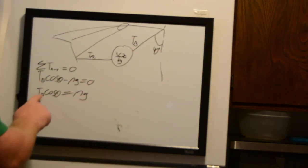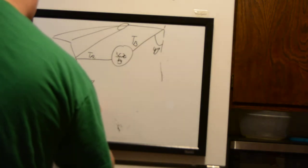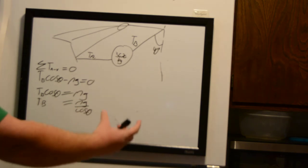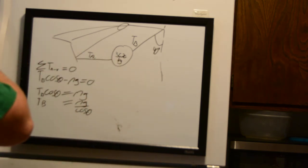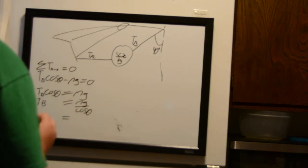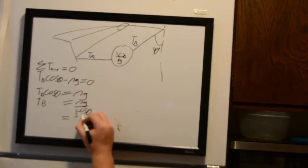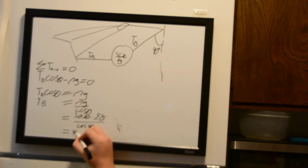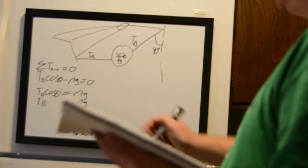Since we're looking for Tension B, we set it equal to mass times gravity divided by cosine of 40 degrees. Plugging in the known values: mass is 3,620 kg times the acceleration of gravity, divided by cosine of 40 degrees. That gives us Tension B equal to 46,310.6 newtons.